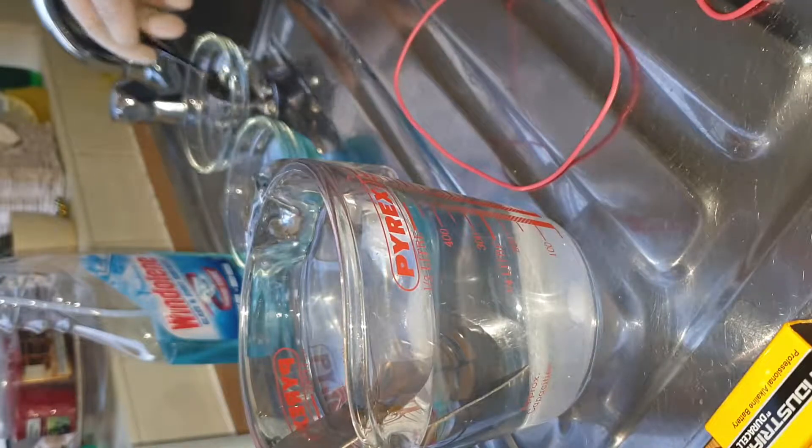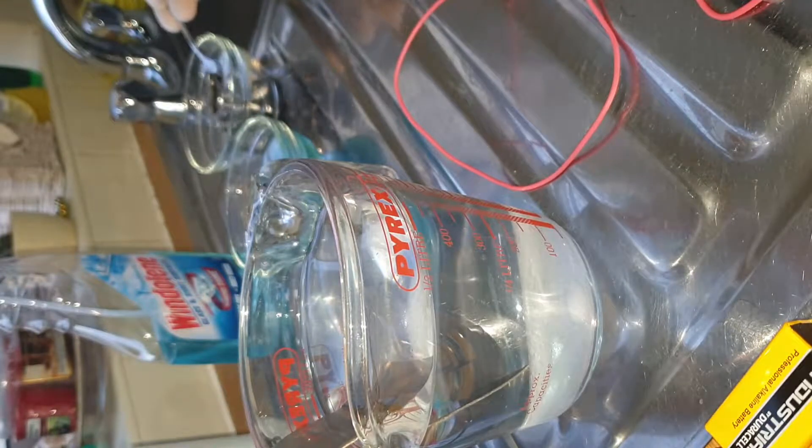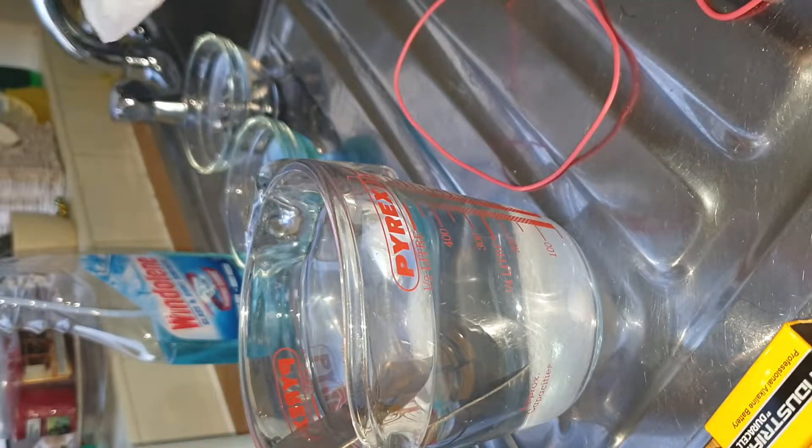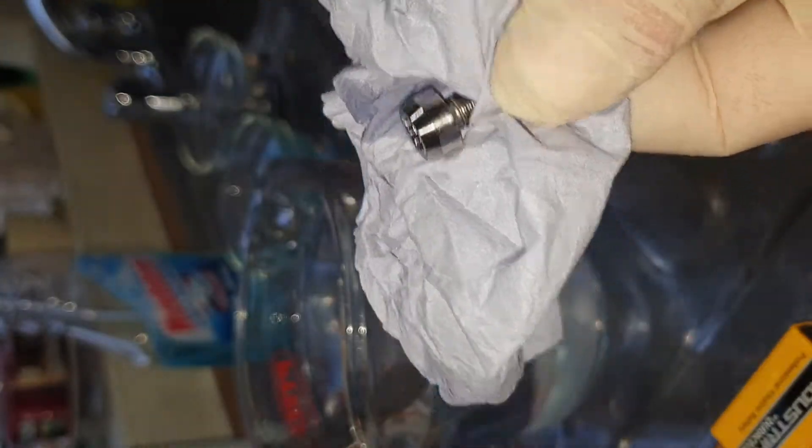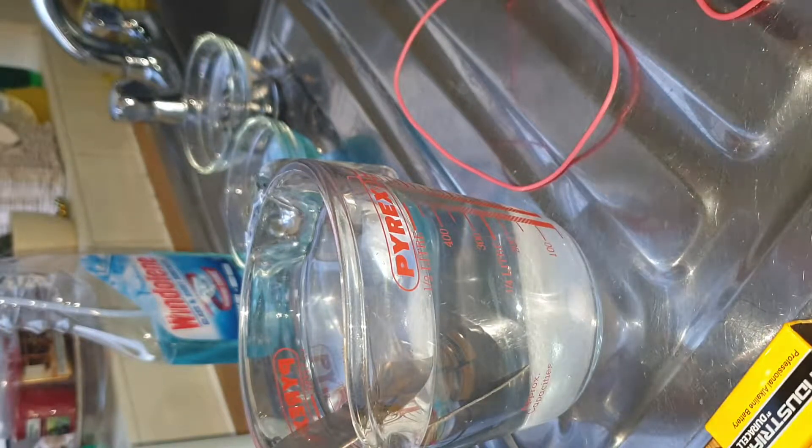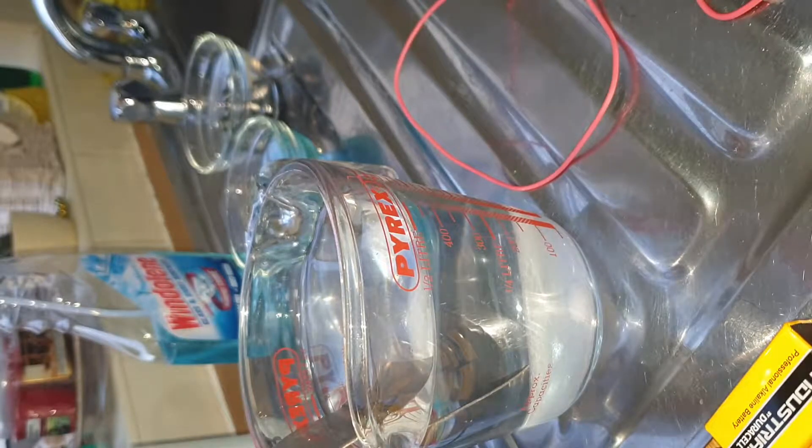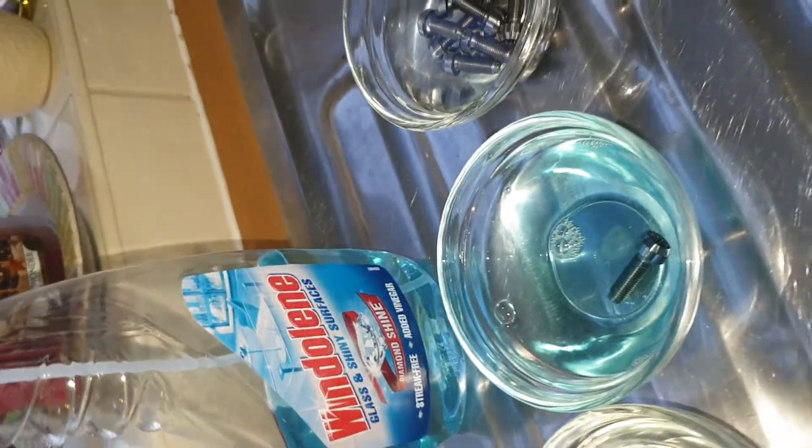Take our bolts out of the acetone, let it dry off, put it in the window cleaner and leave that one in there.